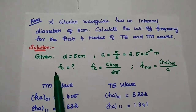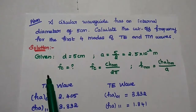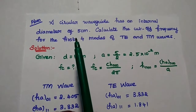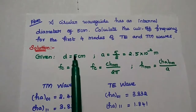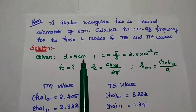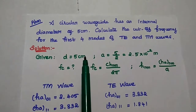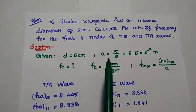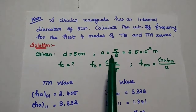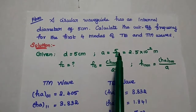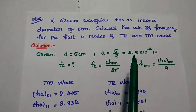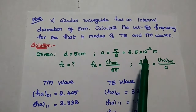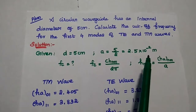In the solution part, first we have to write the given data. The diameter is given as 5 cm. From this, we can get the value of A, that is the radius, equal to 5 by 2, that is 2.5 into 10 to the power minus 2 meters.